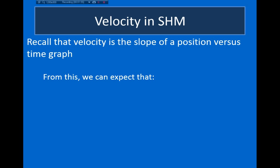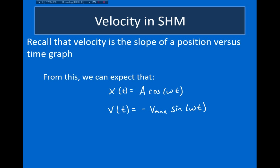So looking at this graph, I would expect that if my position versus time is something like amplitude times cosine of omega t, then the velocity versus time is going to look something like minus the maximum velocity times sine of omega t. So the question now is: how does this maximum velocity relate to the amplitude and frequency of the motion?